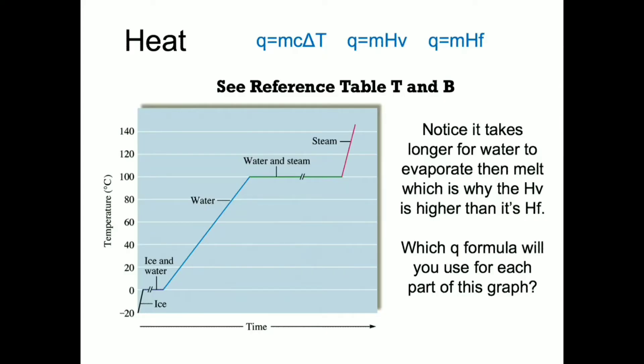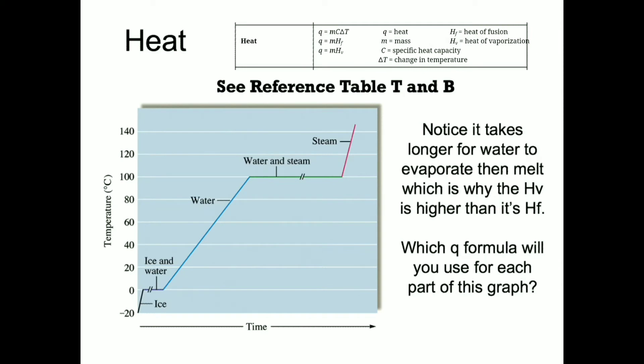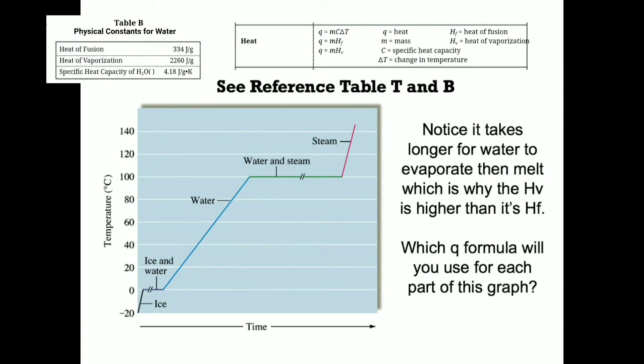Basically, we are going to work on solving word problems. For each word problem or heat calculation, we are going to be using one of three formulas. These formulas are found on reference table T. Reference table T has to be used in conjunction with reference table B, as each equation has a constant found on reference table B.